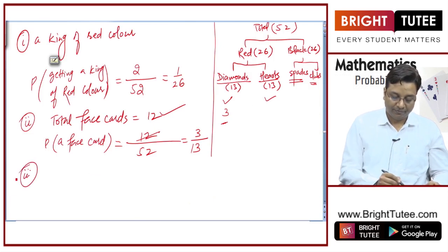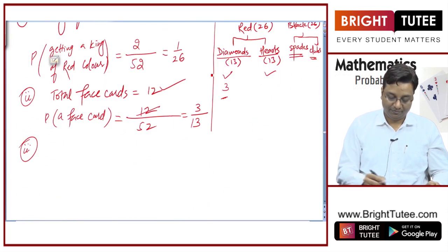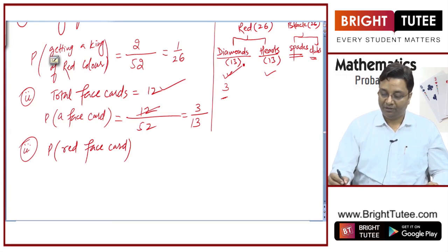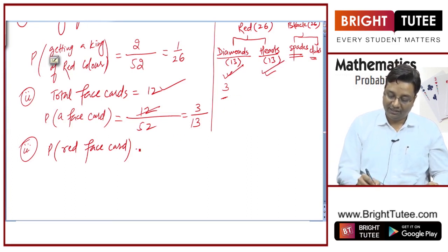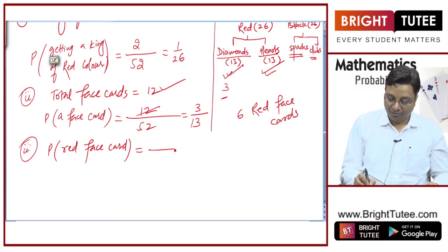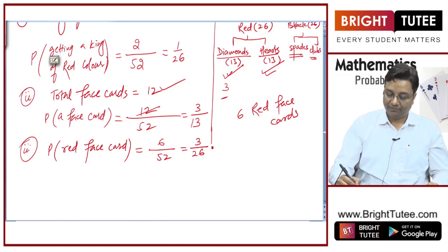Find the probability of getting a red face card. There are 3 face cards of diamonds and 3 face cards of hearts, giving 6 red face cards in total. So the probability of getting a red face card is 6/52, which equals 3/26.